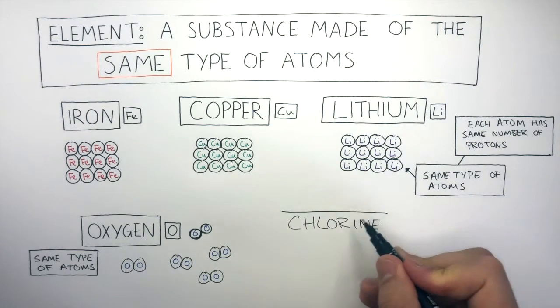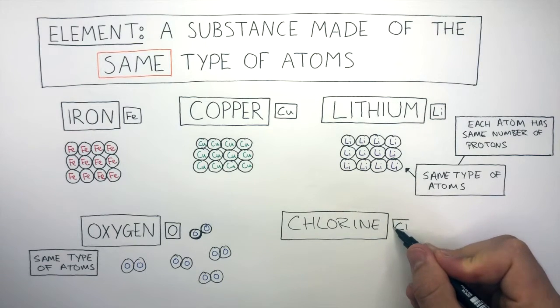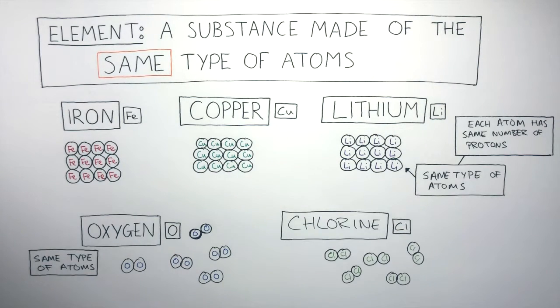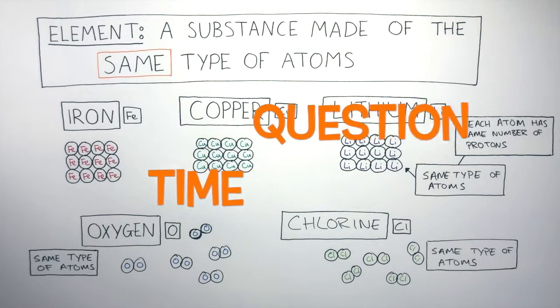Chlorine is another non-metal found in the periodic table. It has a chemical symbol of Cl. Chlorine is also a gas at room temperature and because these chlorine molecules are made of the same type of atoms this too is an element. It's question time. Attempt these questions to check your understanding.